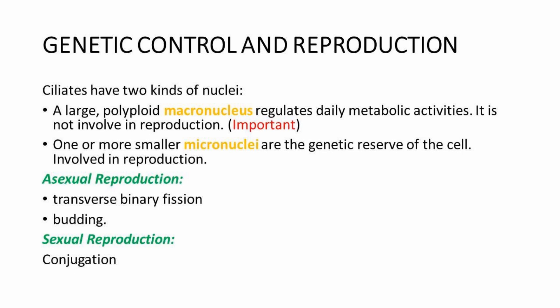Genetic control and reproduction in ciliates take place by means of two nuclei. One is the polyploid macronucleus, which controls daily metabolic activities and growth. The other is the micronucleus, which serves as the genetic reserve.